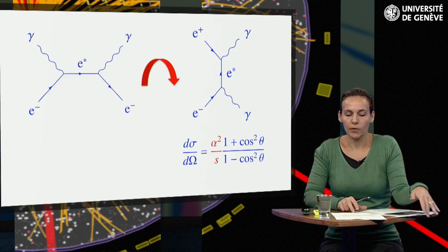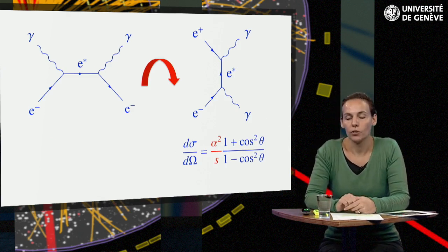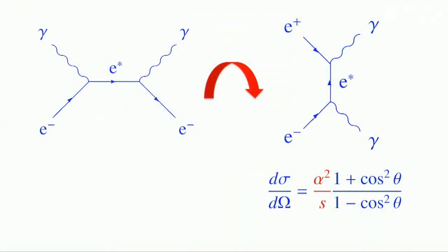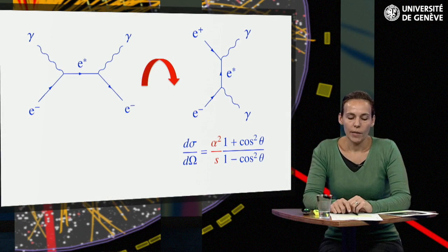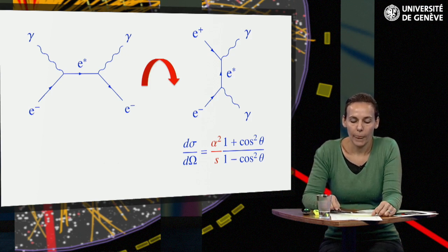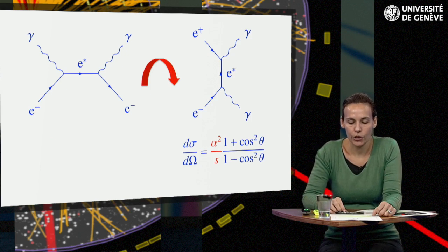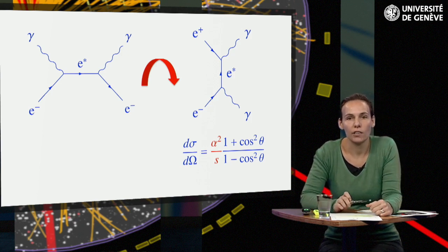Rotating the Compton scattering Feynman diagram by 90 degrees, one obtains another process, the annihilation of an electron-positron pair into a pair of photons. Notice that we also converted the outgoing electron of the Compton process into an incoming positron. This remains without consequence, because these two states are completely equivalent. We will come back to that at the beginning of module 6, when we discuss antiparticles in more details. With the appropriate changes in the kinematic variables, we can convert the Compton scattering results directly into the cross-section for pair annihilation in the center of mass frame and neglecting masses for s much larger than the square of the electron mass.